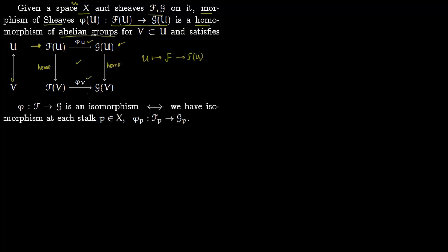Now we also have to think about this morphism of sheaves in terms of stalks. Proposition 1.1 on page 63 of Hatcher says that a morphism of sheaves is an isomorphism if and only if it is true at the stalk level — so we have an isomorphism at each point.